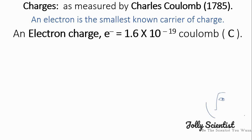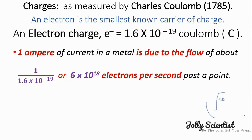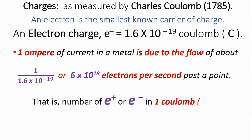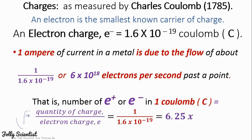Charge is measured by Charles Coulomb in 1785. An electron is the smallest unit that has no carrier of charge. An electron charge is equivalent to 1.6 exponential of negative 19 coulombs. In other words, one amp of current in a metal is due to the flow of about 6.25 exponential of 18 electrons per second past the point. Number of charges in one coulomb equals the quantity of charge divided by the electron charge, which equals 6.25 exponential of 18.